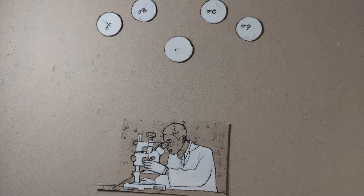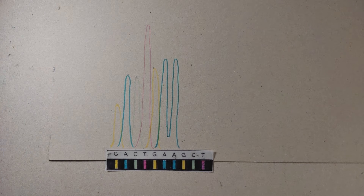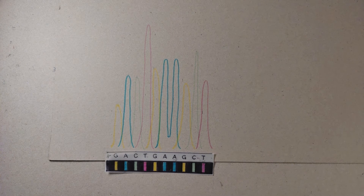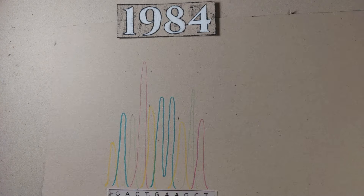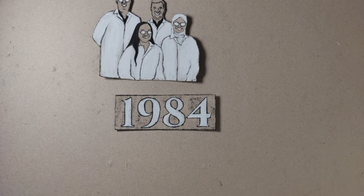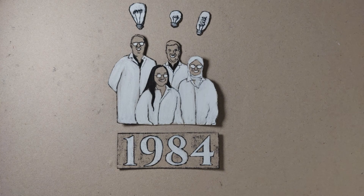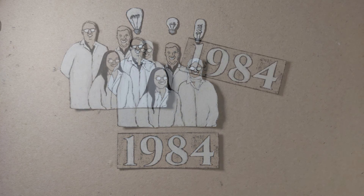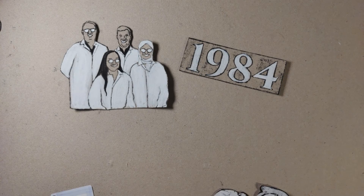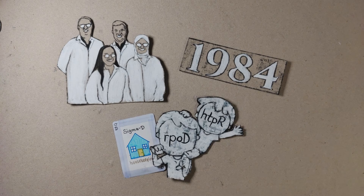In the late 70s, the revolutionary Sanger DNA sequencing technology was developed, which allowed complete sequencing of genes encoding sigma factors. In 1984, a research team found amino acid sequence homology between E. coli sigma D and the product of a gene already known to be a positive regulator of the heat shock response, called HTPR.